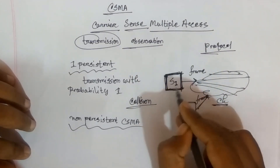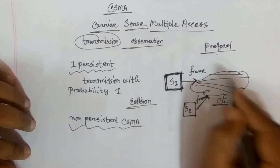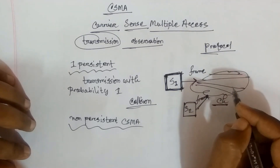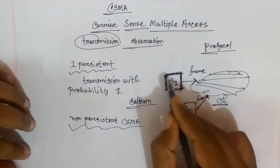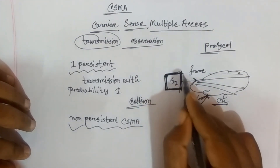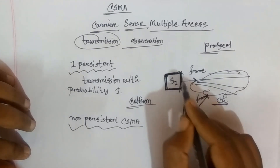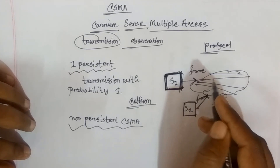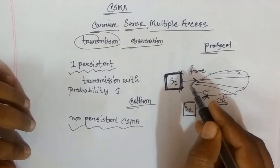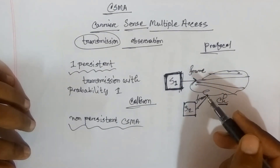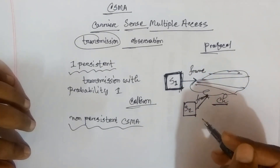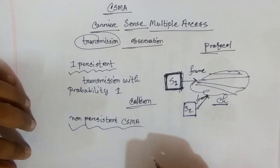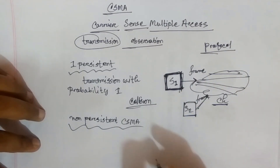Suppose station S1 senses the channel and sees that the channel is busy. Then S1 will wait a certain amount of time, and after waiting it will sense again. When the channel is free, transmission will start. This is Non-Persistent behavior.